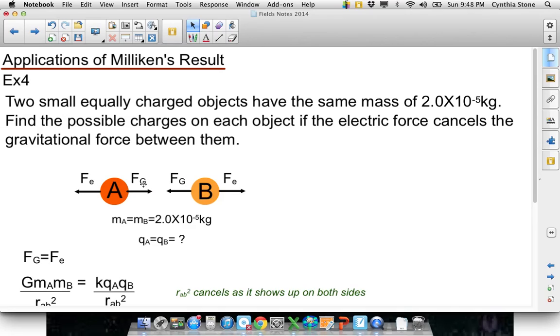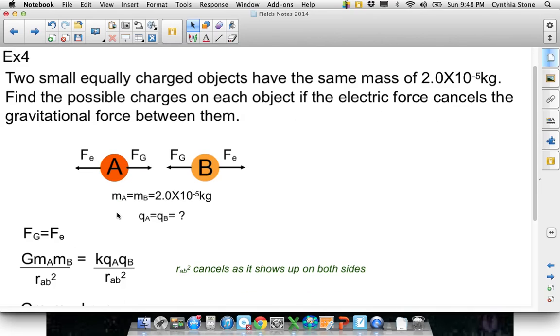The gravity force, they feel a gravity force towards each other based on their mass, but based on their charge, they have the same charge, right? Equally charged objects, and that causes them to repel. So you equate gravity and electric force. Again, we're pretending there's no Earth or anything influencing this. So you, there's your equation. The RABs cancel.